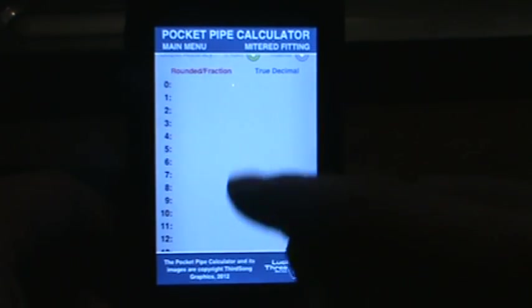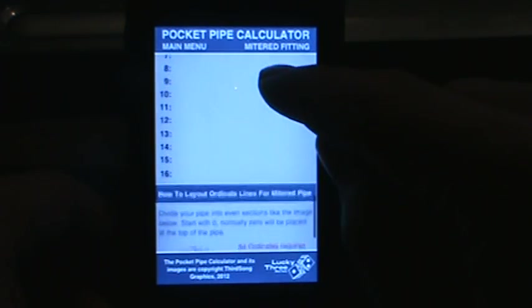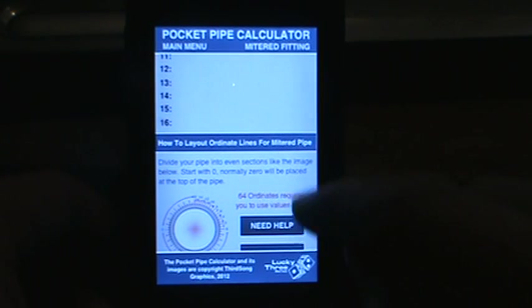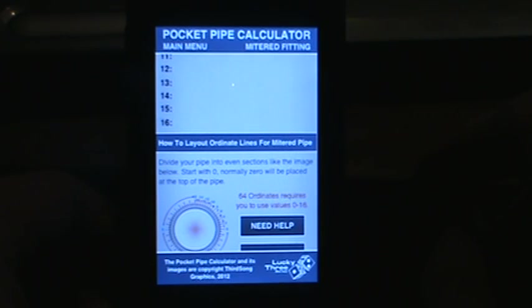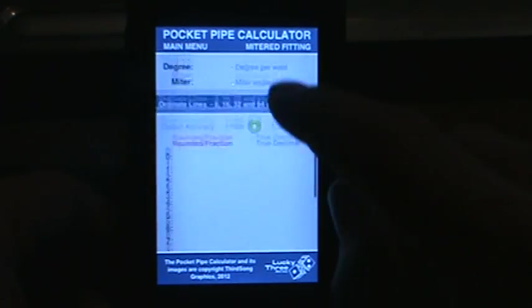When you scroll down you'll see this is where your output is for your values on your ordinate lines, and then your hint information at the bottom to basically tell you how to lay out your pipe.